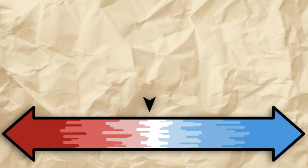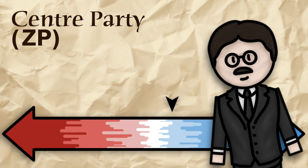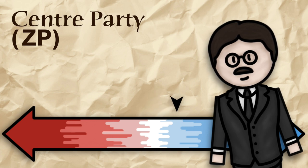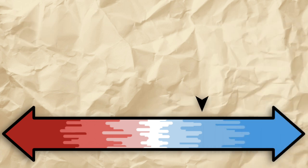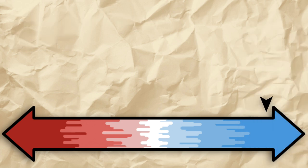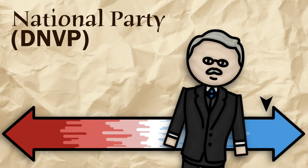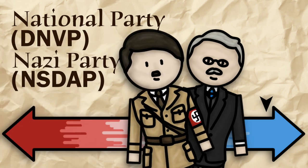In the centre there is, shockingly, the Centre Party, or ZP. You should note that they are actually more centre-right than dead centre. The main moderate right party is the People's Party, the DVP, and then the two main right-wing extremist parties are the DNVP, the National Party, and the Nazi Party, the NSDAP, who technically at this point in 1919 haven't been formed yet, but it's not long before they are.